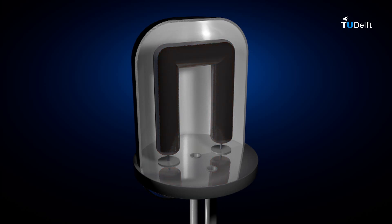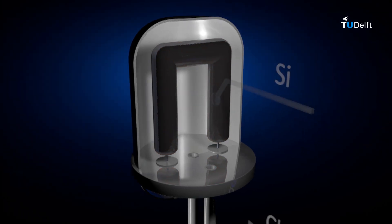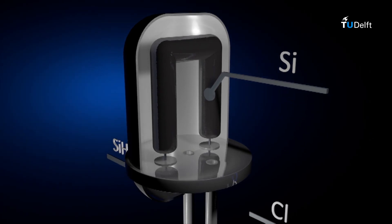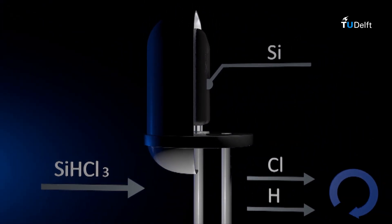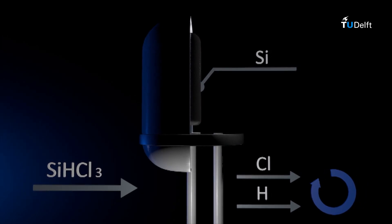As the exhaust gas still contains chlorosilanes and hydrogen, these gases are recycled and used again. Chlorosilane is liquefied and distilled and reused. The hydrogen goes through a clean-up process and is recycled back into the reactor.